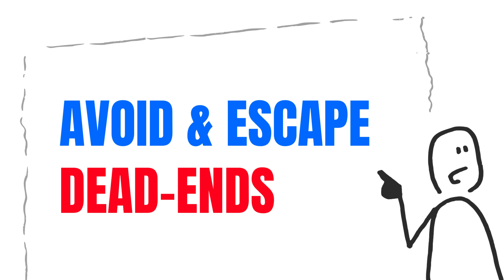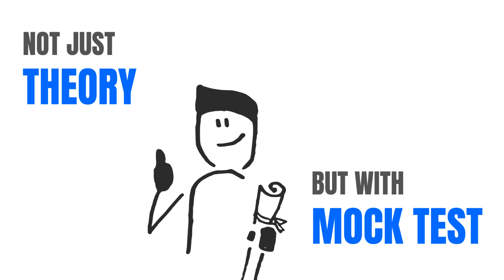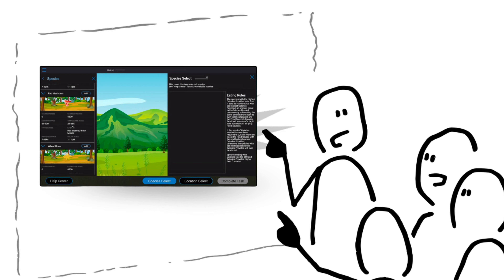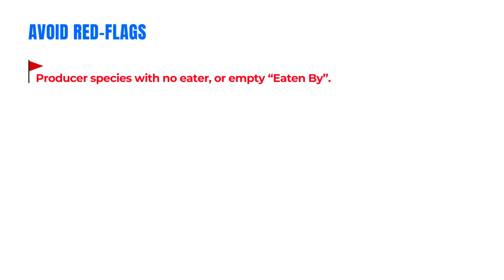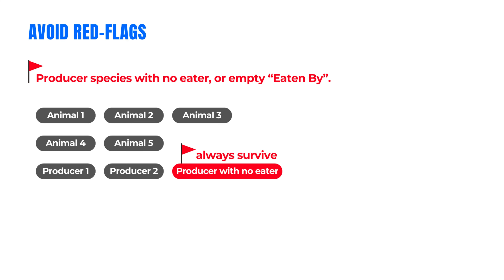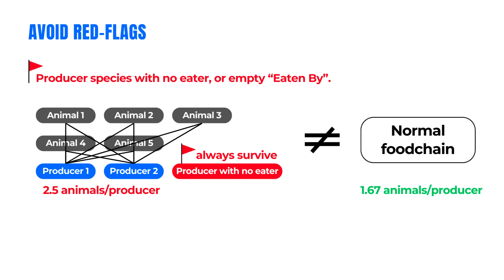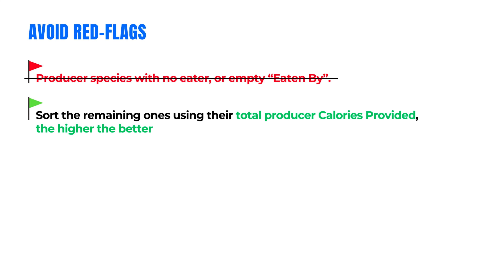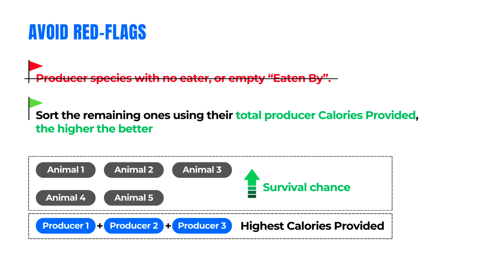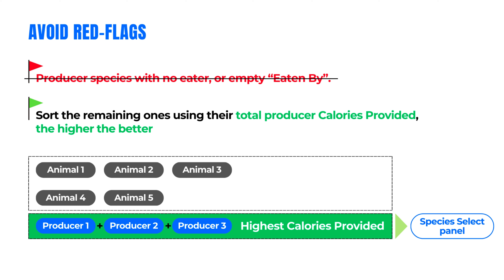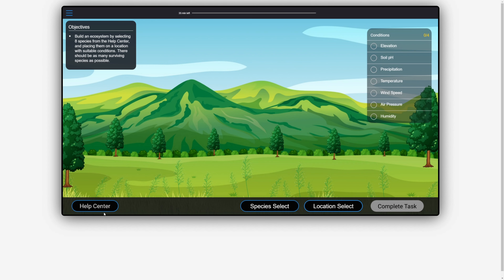Let's talk about how you can avoid and escape dead ends. The first sign of a potential dead end is a producer species with no eater — an empty Eaten By. While the remaining two producers have to support five animals (2.5 animals per producer), compare that to a normal food chain where the ratio is only 1.67 animals per producer — you'll see why such sets are much harder to work with. After ruling out red-flagged sets, sort the remaining ones by total producer calories provided. The higher, the better, because that increases the survival chance of the first level of animals. When done sorting, add all three producers of the best set to the species select panel and start choosing animals.